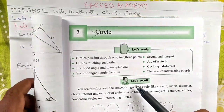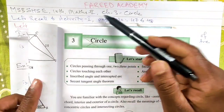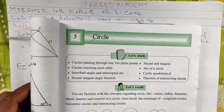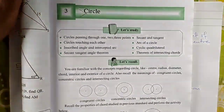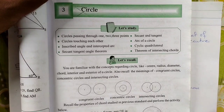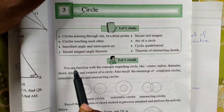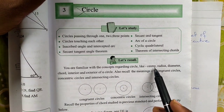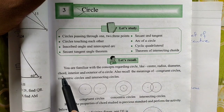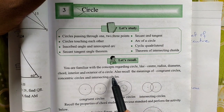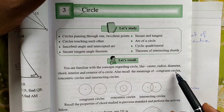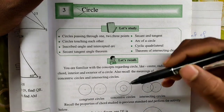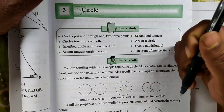Let's recall an activity on page number 47 and 48. You are familiar with the concepts regarding a circle like center, radius, diameter, chord, interior and exterior of a circle. Also recall the meaning of congruent circles, concentric circles, and intersecting circles.